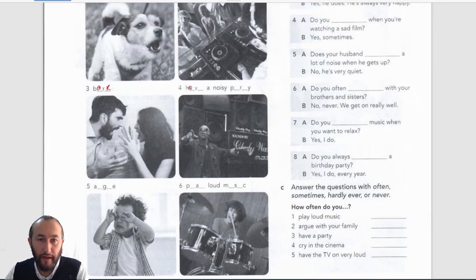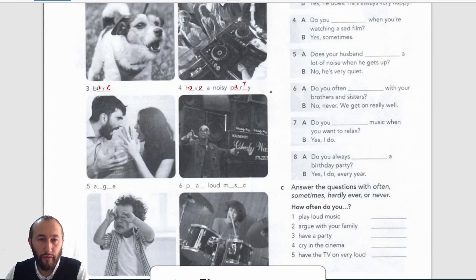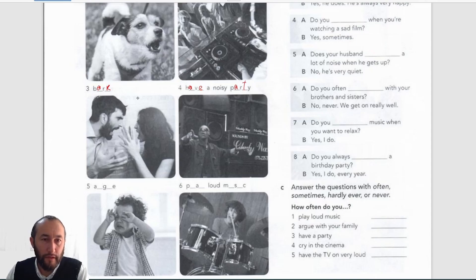Number four: 'have a noisy party' — h-a-v-e, a noisy party, p-a-r-t-y. Number five: these two guys are arguing, so 'argue' — a-r-g-u-e.